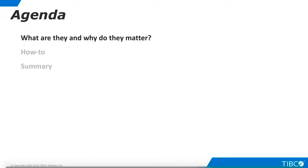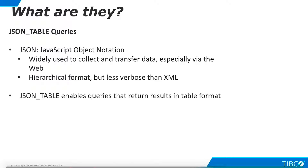Let's begin by discussing what JSON table queries are and why they are important for data virtualization. JSON stands for JavaScript Object Notation. It is a structuring convention for data. JSON files are widely used to collect and transfer data, especially via the web. JSON organizes data in a hierarchical format that is analogous to XML, but less verbose.